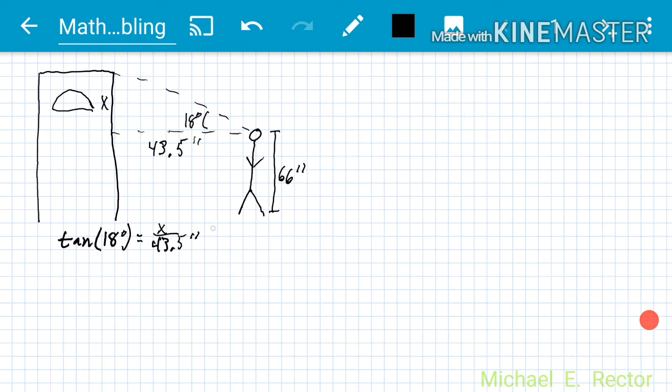Now we need to get X by itself, so we multiply both sides by 43 and a half, giving us 43 and a half inches times tan of 18 degrees equals X.